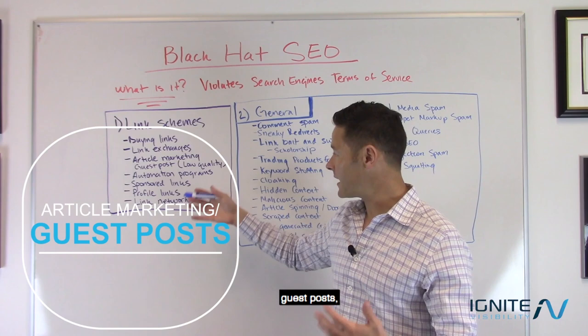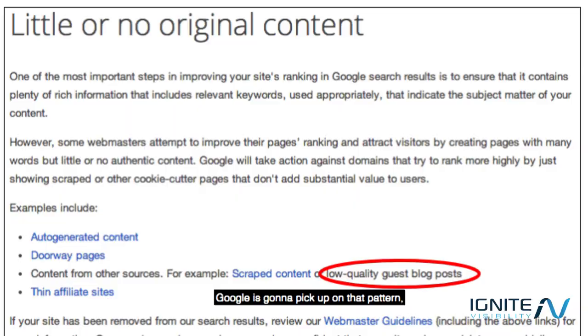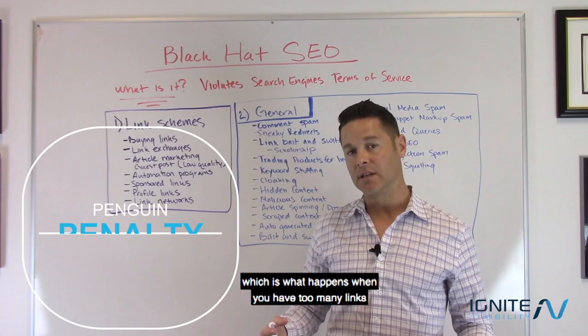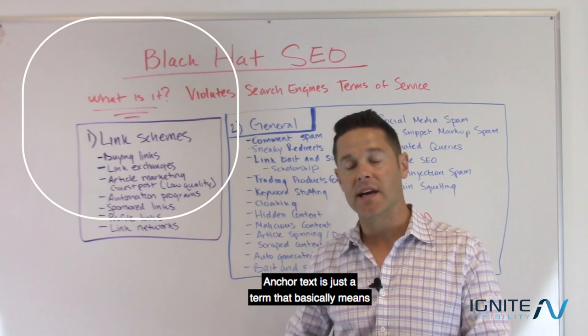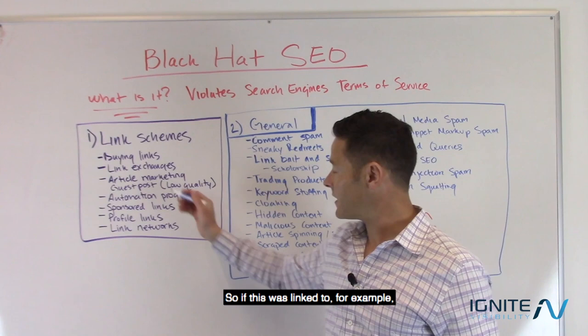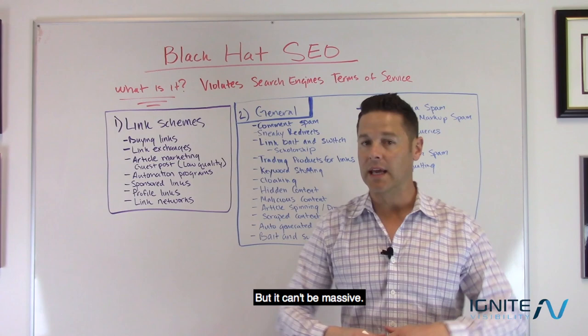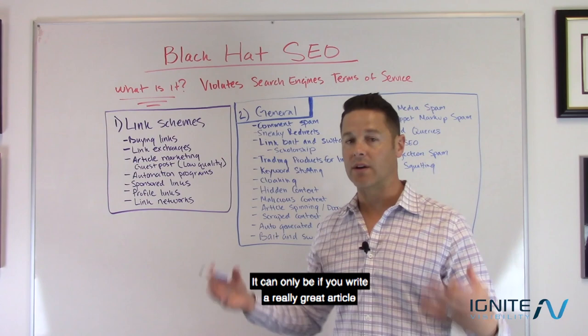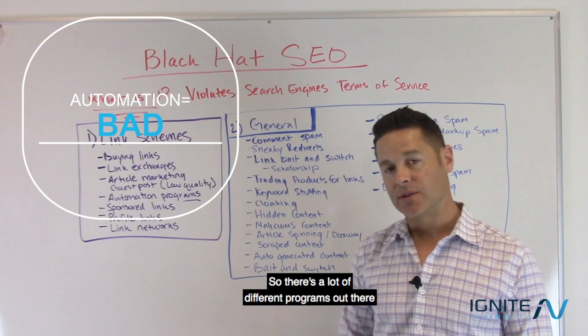Article marketing and guest posts — anything that's low quality. If you write a hundred articles and get them posted on a whole bunch of other websites around the web, Google is going to pick up on that pattern and you'll get a manual action penalty, which shows up inside Google Search Console. Or you might get a Penguin penalty, which happens when you have too many links pointing at your website with the same anchor text. Anchor text is just the text that's inside the link. You can do guest posts and article marketing, but it can't be massive or low quality — it can only be a really great article linking to something relevant.